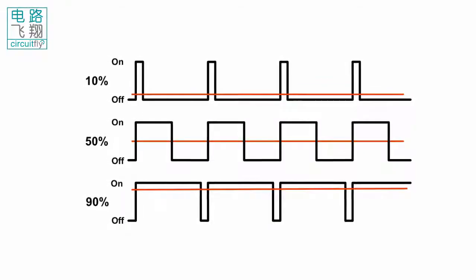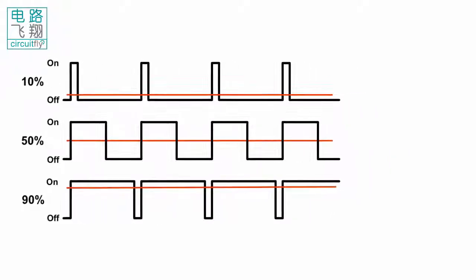If you repeat this on-off pattern fast enough with an LED, for example, the result is as if the signal is a steady voltage between 0 and 5 volts, controlling the brightness of the LED.